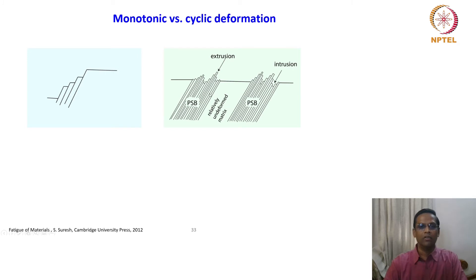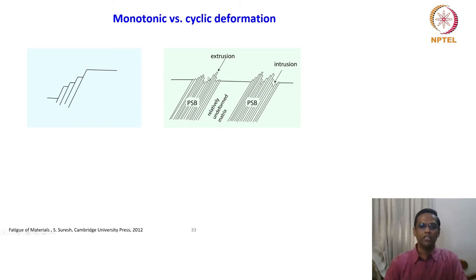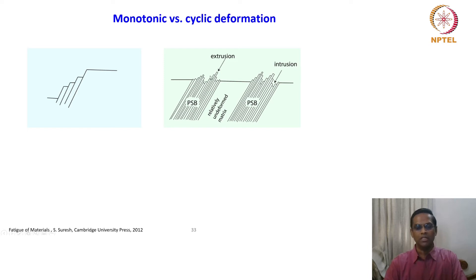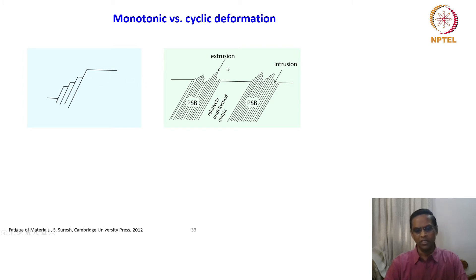In cyclic deformation, we have a characteristic surface feature: intrusions and extrusions. These are surface markings clearly identifiable on fatigue samples. They occur at slip bands — not uniformly in the matrix, as there is also undeformed matrix in between. A pile of crystals comes out as an extruded member and also as an intruded member. In contrast, under monotonic slip, the crystal just deforms in steps. This is one of the primary differences between these two types of deformation.